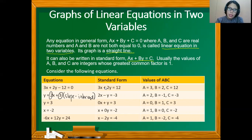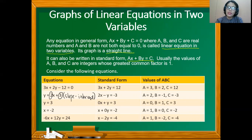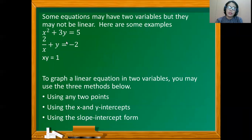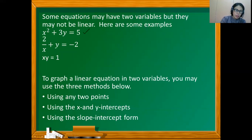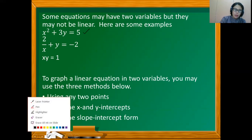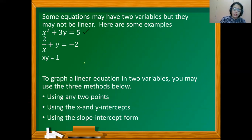In standard form, the requirement is that the coefficient of x should not be negative. Now, some equations may have two variables but may not be linear. For example, an equation is not linear if the exponent of the variable x is 2, since the exponent for a linear equation must be 1 only.